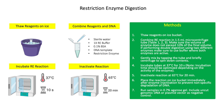Store reagents on ice. Combine the RE reaction in a 1.5 ml microcentrifuge tube. The RE reaction includes sterile water, 1X RE buffer, 0.1% BSA, DNA template, and the restriction enzyme. Make sure the volume of enzyme does not exceed 10% of the final volume. If performing double digestion using two different enzymes, make sure to use a buffer where both enzymes are active. Gently mix by tapping the tube and briefly centrifuge to spin down contents.